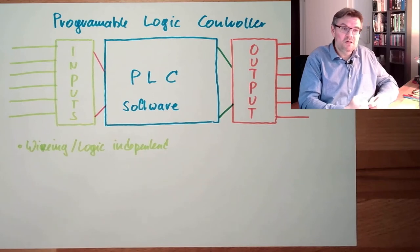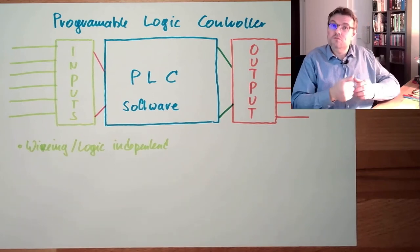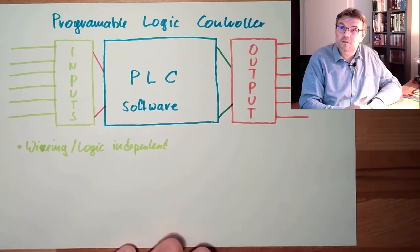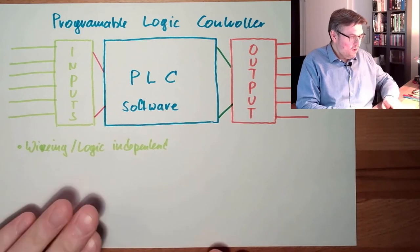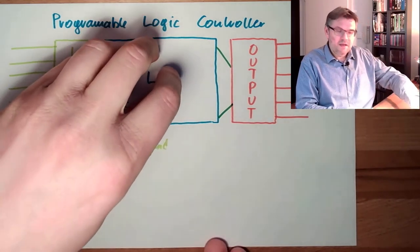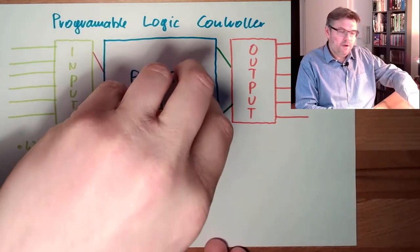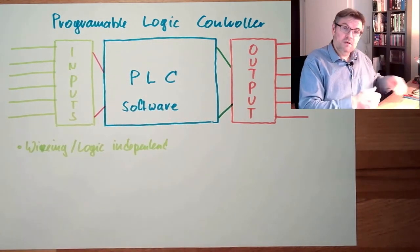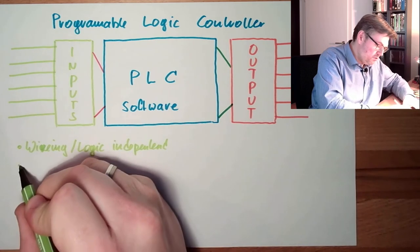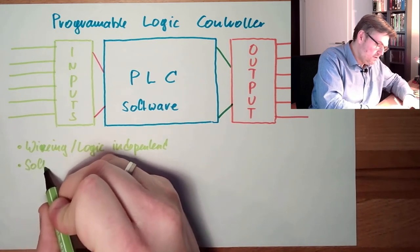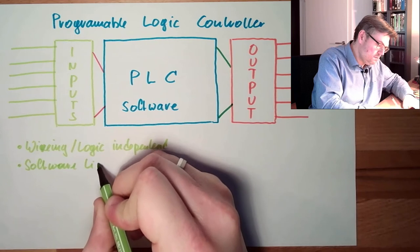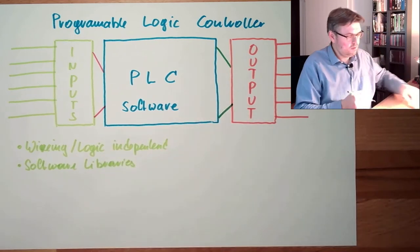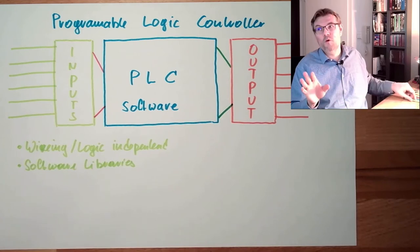Also, machines which have different tools, for instance, the logic might only have to change. That's easier. Also, some parts of the logic, they are reused. So we can use the benefits of software development, like using libraries. So there's the possibility of software libraries. Good point.